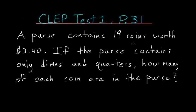A purse contains 19 coins worth $3.40. If the purse contains only dimes and quarters, how many of each coin are in the purse?